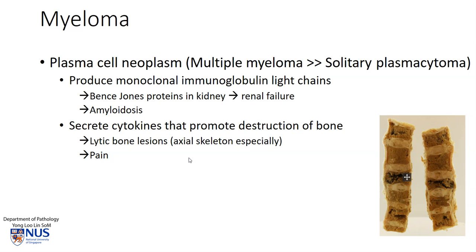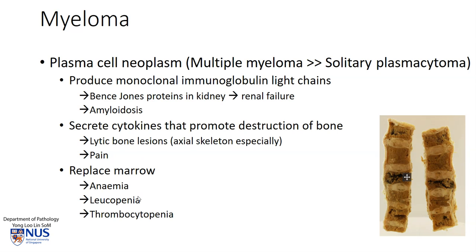There may also be resulting hypercalcemia. And because the bone marrow is replaced by these tumor cells, the other cell lines will be affected — so there can be anemia, leukopenia, and thrombocytopenia as a result.